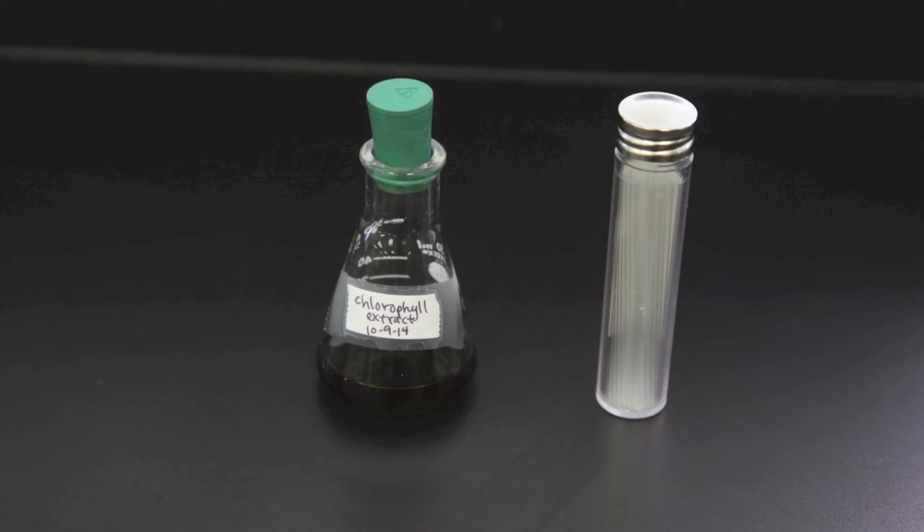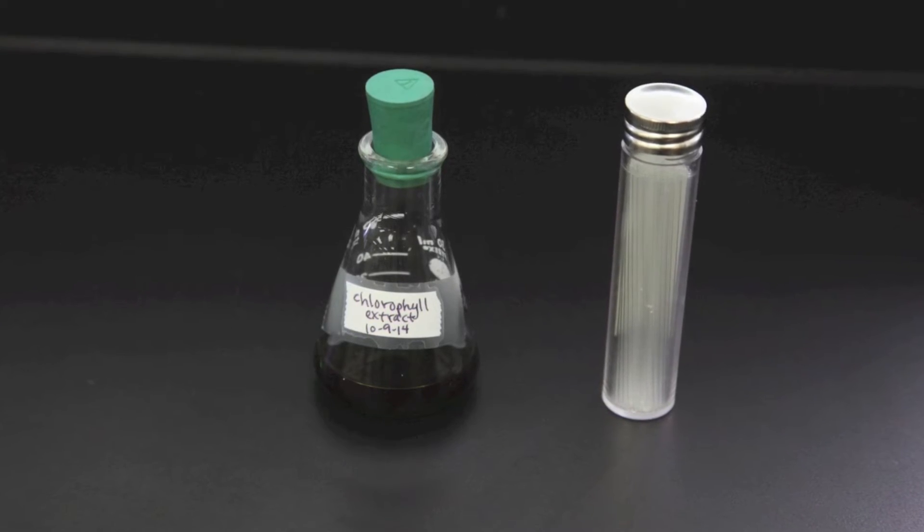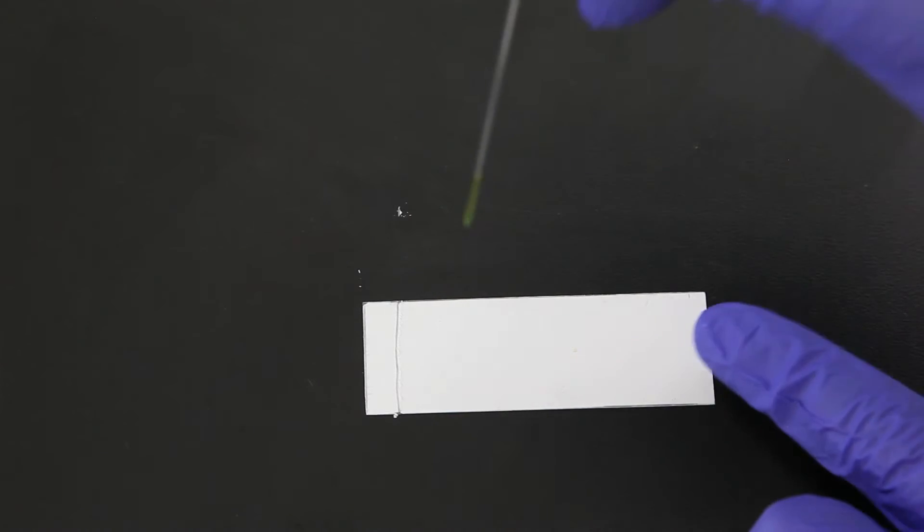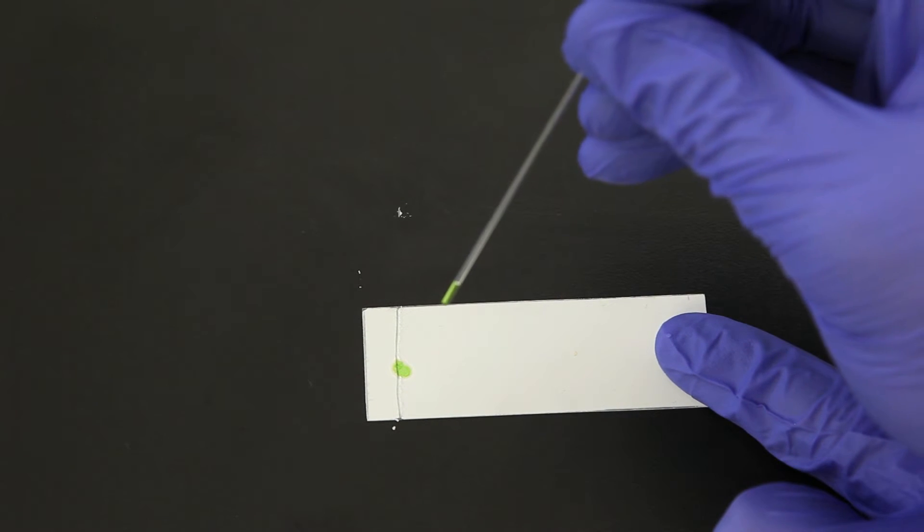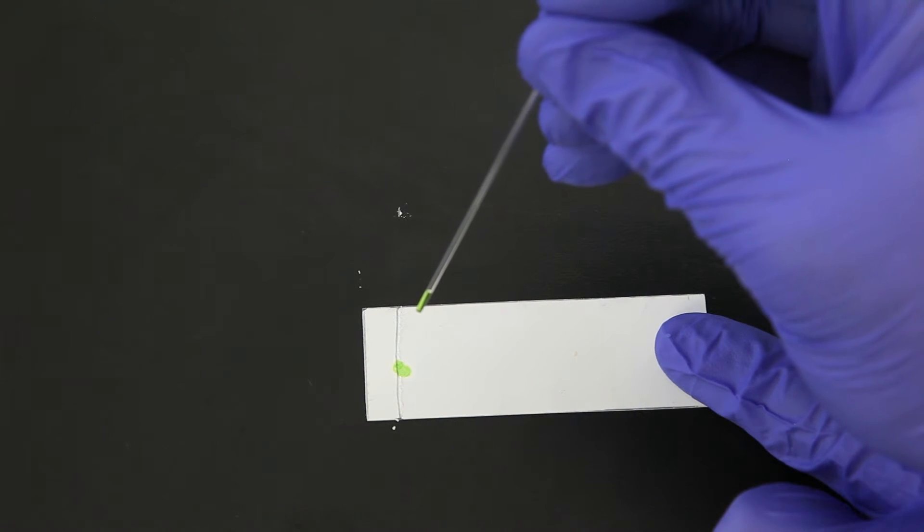Obtain a capillary tube and a bottle of concentrated chlorophyll extract. Use the capillary tube to apply a drop of extract in the center of the pencil line. Let it dry and reapply at least twice more.